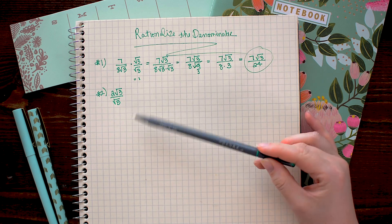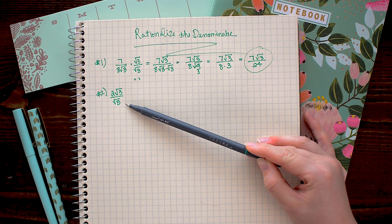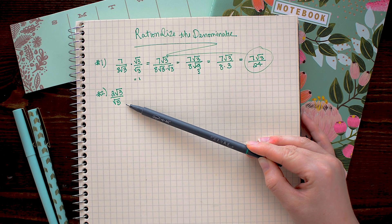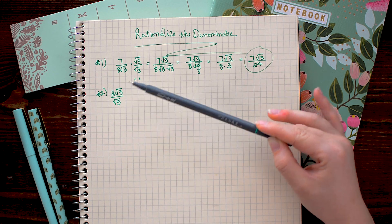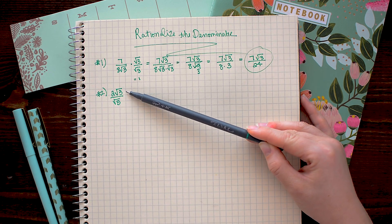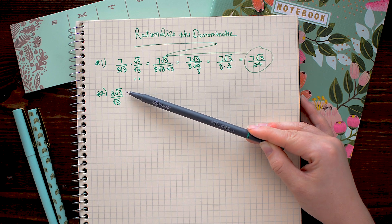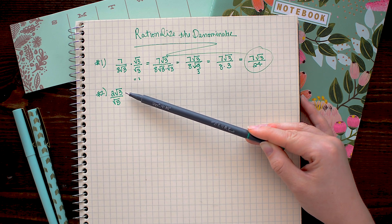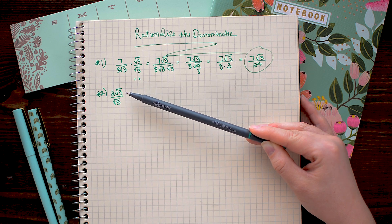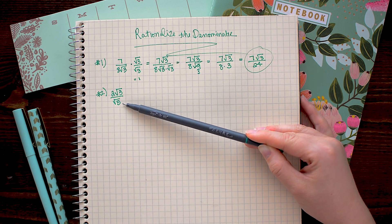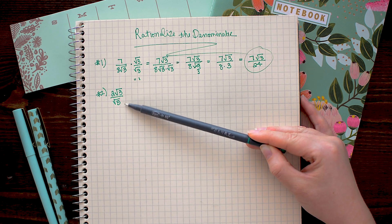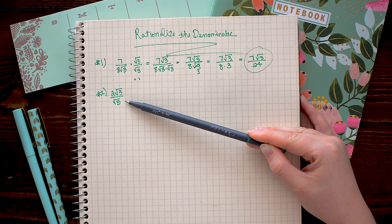In this problem, we have 2 square root 3 over square root 5. Now a common mistake here would be to try to multiply by the square root of 3. We need to make sure that we are multiplying by the square root that we want to get rid of. And we want to get rid of the square root in the denominator. So I'm going to multiply the top and bottom by the square root of 5.